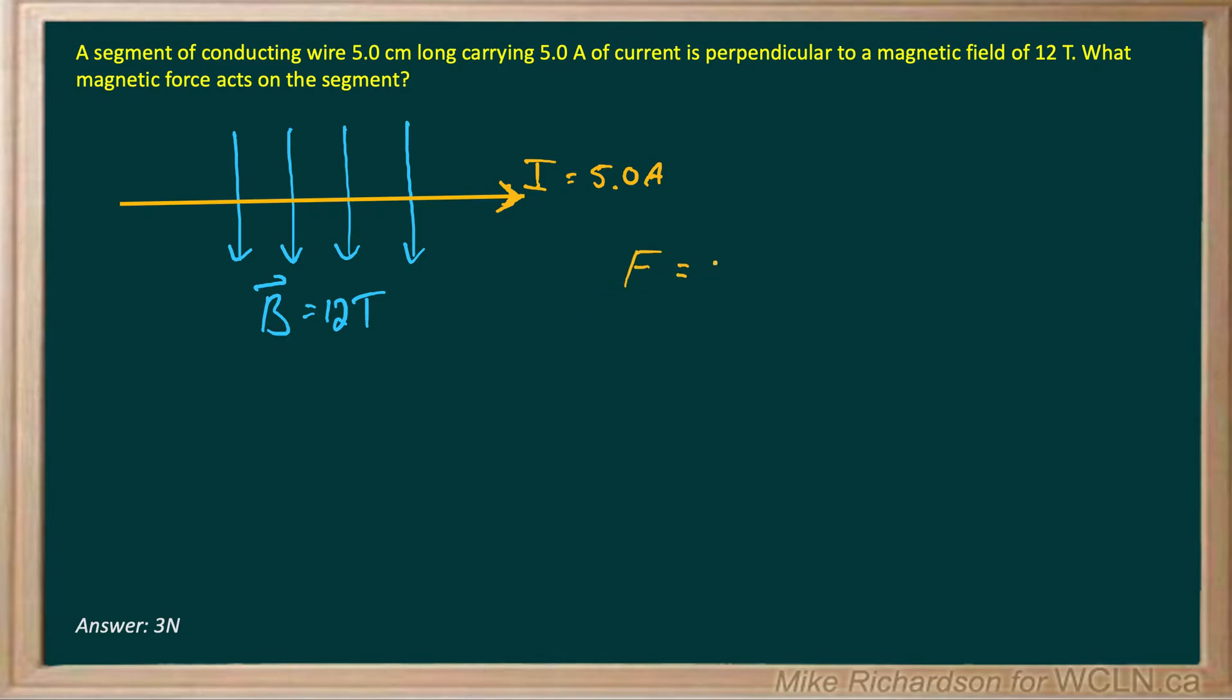Magnetic force for a current carrying wire is B times I times L. Now as long as your magnetic field and your current are right angles to each other you're good to go, so it's already satisfied.